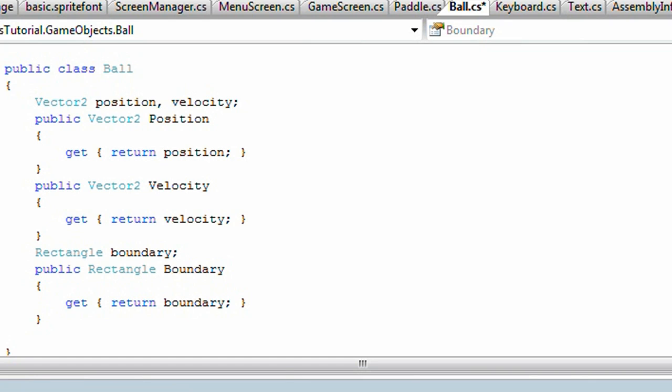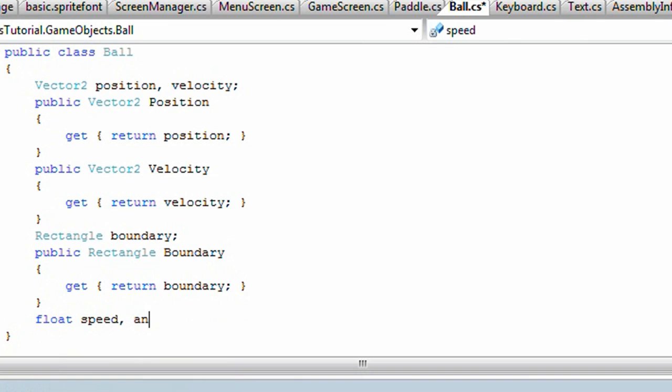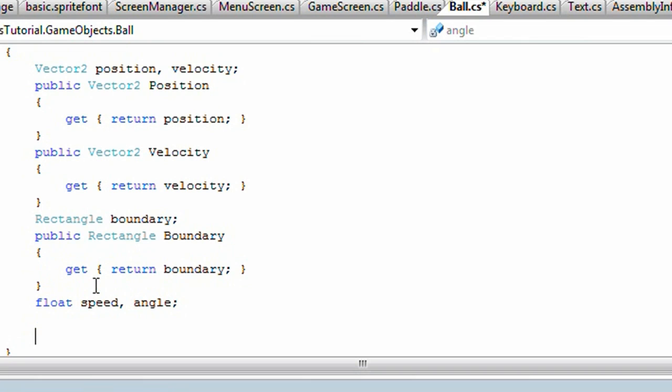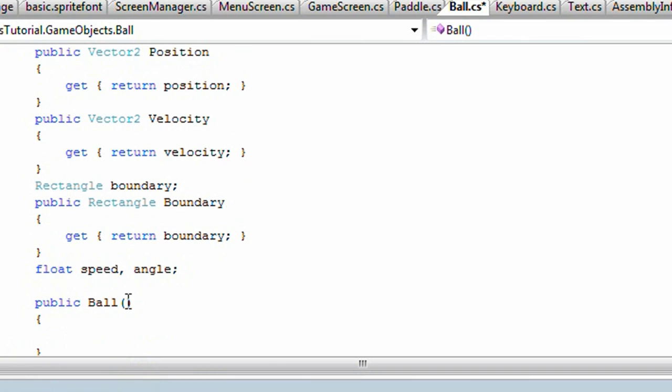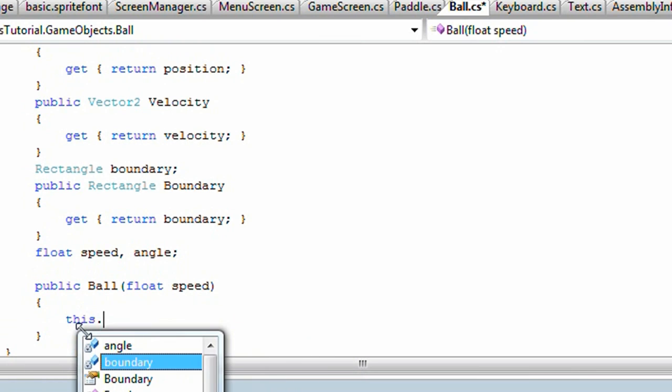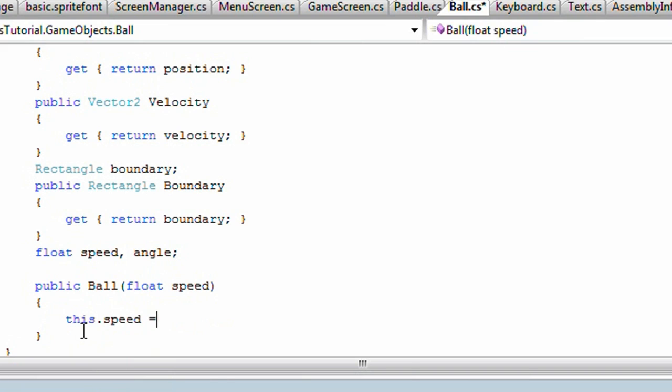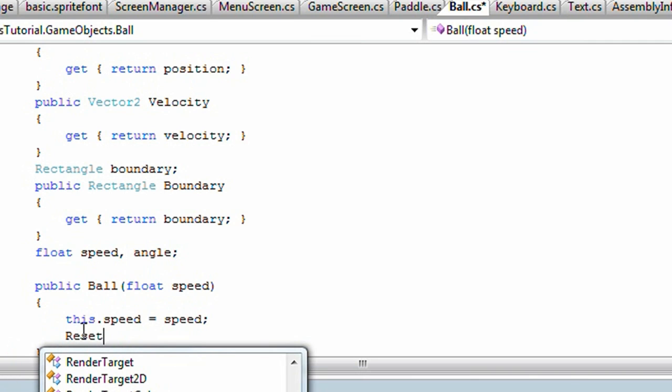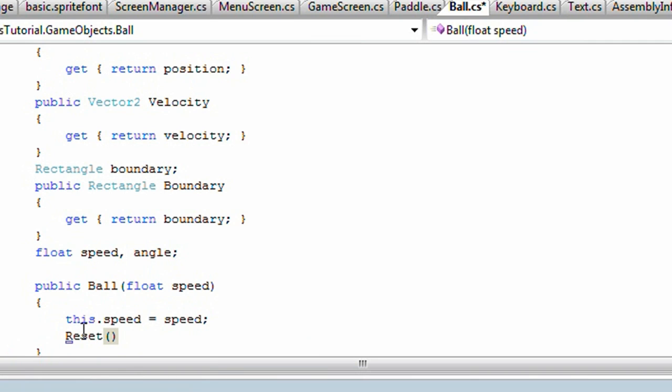Now we need a float speed and angle. And we need, after that we need a constructor and we'll pass it a speed. Inside the constructor, we'll call this.speed is equal to the passed speed, and we'll call Reset. And since we didn't create it, it'll ask us if it wants us to auto-generate, just have it auto-generate.